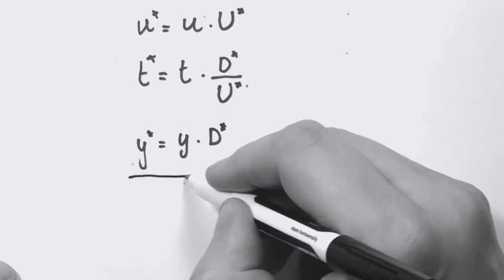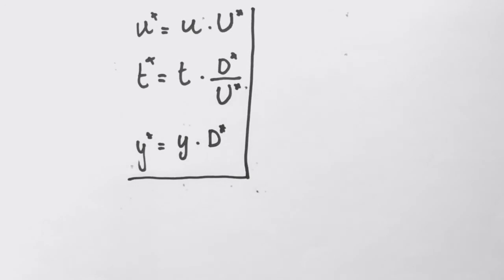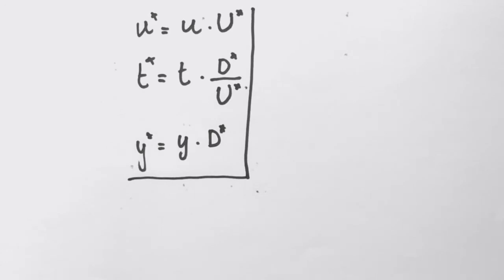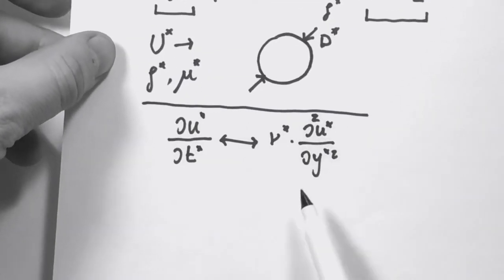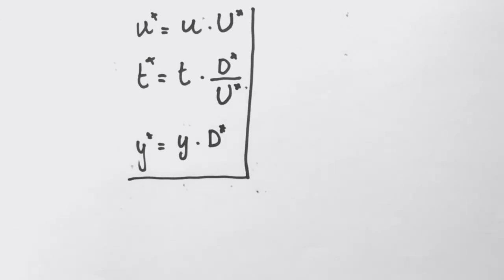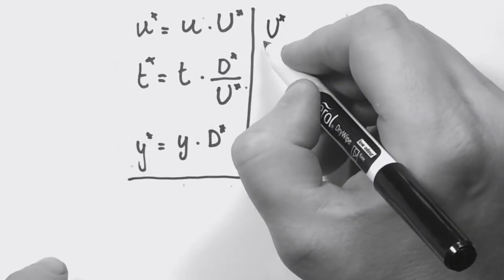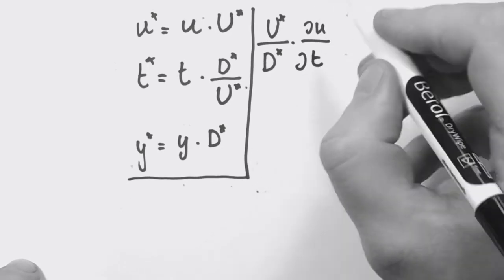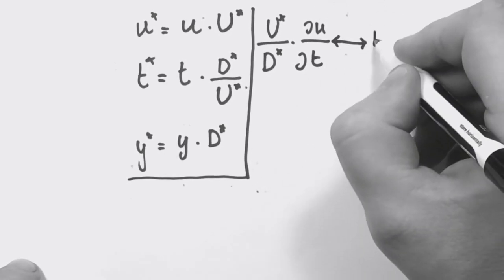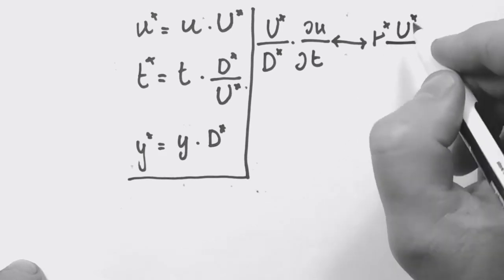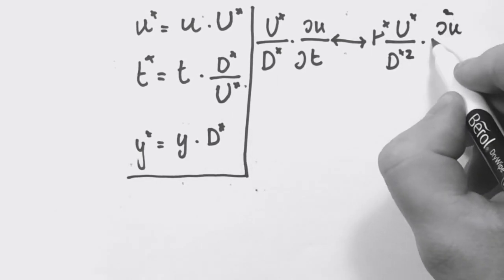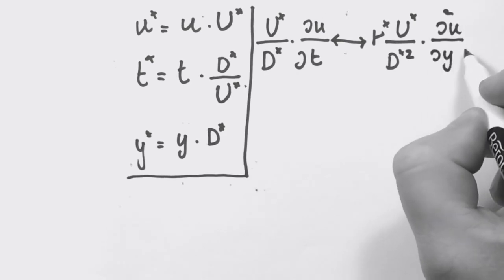At this point we can take these quantities where we have introduced u, t, and y in non-dimensional terms and substitute in the dimensional balance here. So we have U*/D* times ∂u/∂t, and then it goes to balance kinematic viscosity times U*/D*² times ∂²u/∂y².